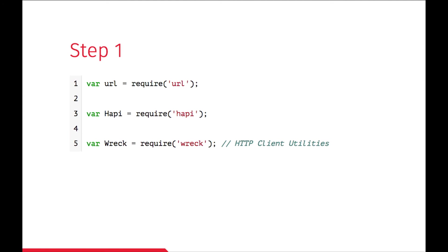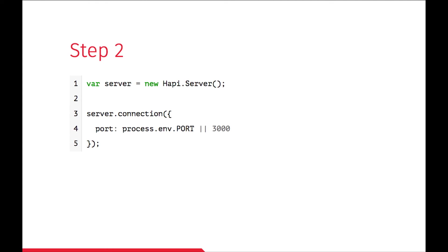To create a simple proxy in Node.js we need six simple steps. Step one: we require Hapi and Wreck — Wreck is part of the Hapi family, it's a client utility for HTTP requests. Then we create a new Hapi server and specify the port — here you can either take an environment variable or set it to 3000 by default.